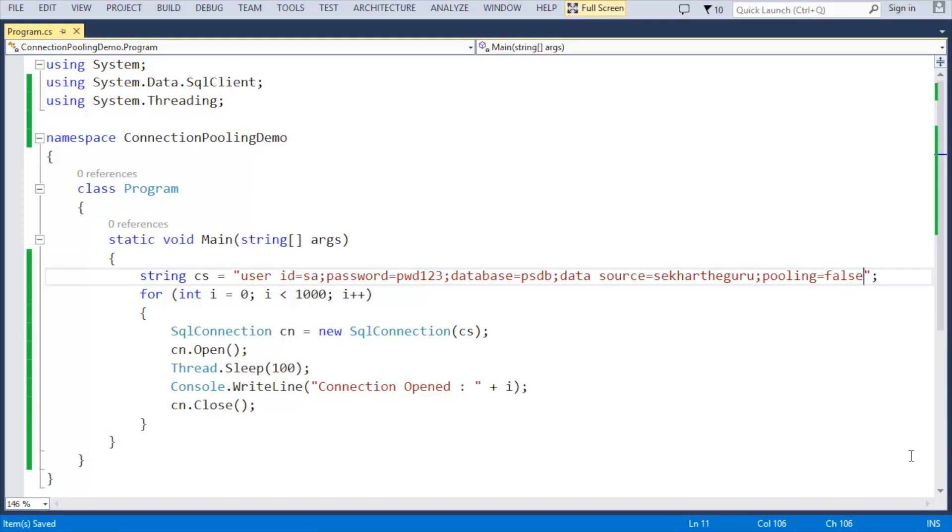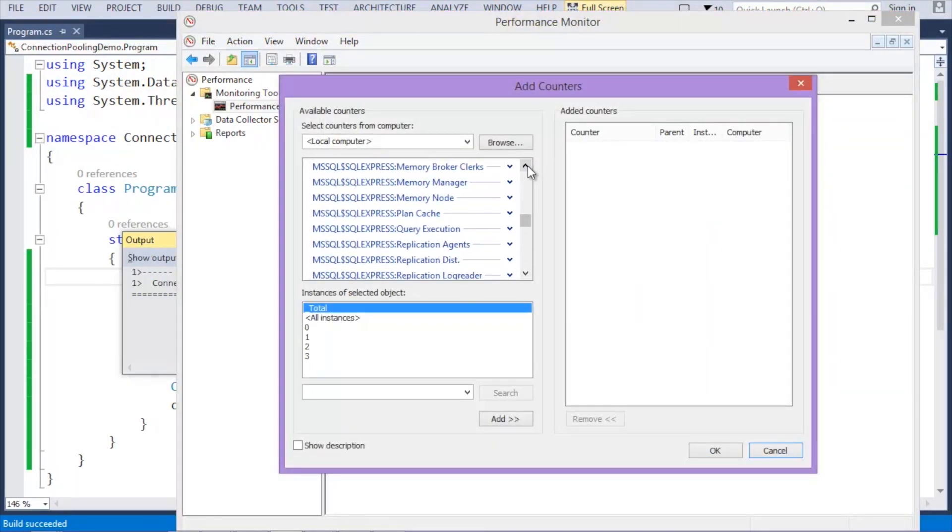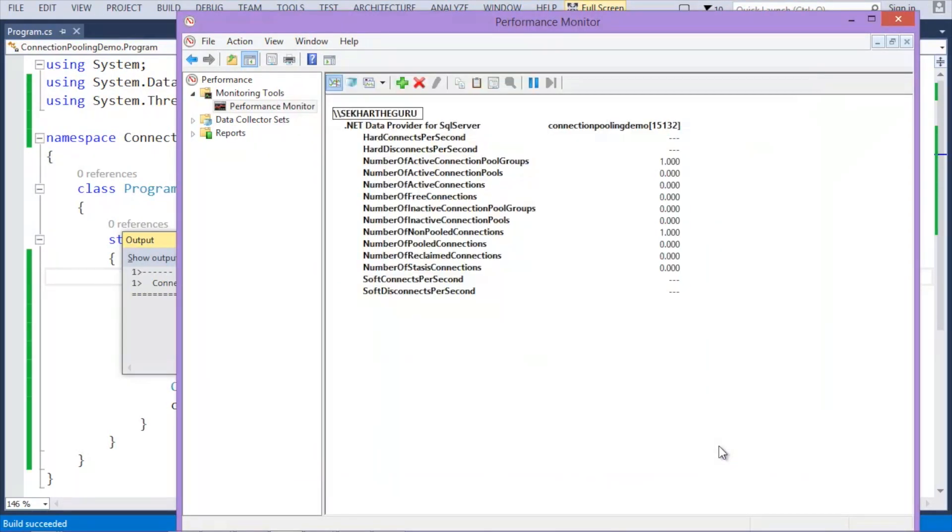Once again, let us open the performance monitor and clear the existing application and re-add our application to get the data. We can observe the number of hard disconnects which are opening and closing.